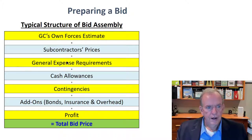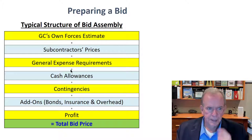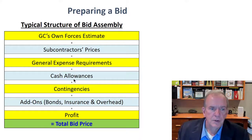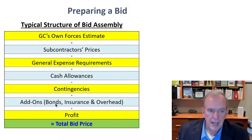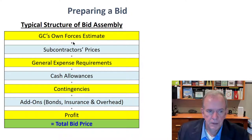To summarize: own forces estimates, sub prices, general expense requirements, cash allowances, contingencies — things that would have been in the specifications and general requirements — and then the add-ons: bonds, insurance, and overhead, which we'll talk about coming up. And what's your profit target margin? Add them all up and make sure you don't forget one of those line items.